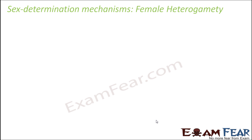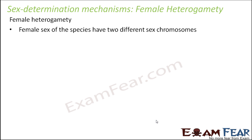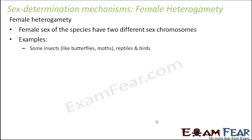Let us see what is female heterogamity. When we say female heterogamity, that means in females the sex chromosomes are different, but in males they are the same. So the female sex of the species have two different sex chromosomes. It is seen in some insects like butterflies and moths, and also in some reptiles and some birds. Male heterogamity is more common, but female heterogamity is still seen in some insects and reptiles.